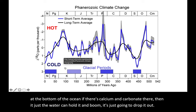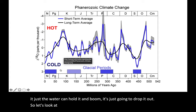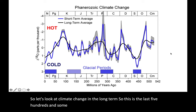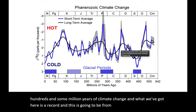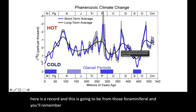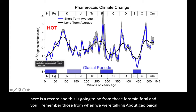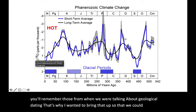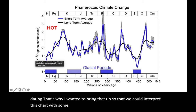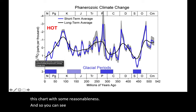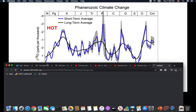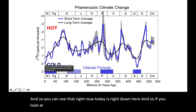Let's look at climate change in the long term — the last 500 and some million years. What we've got here is a record from those foraminifera. You'll remember those from when we were talking about geological dating. You can see that right now, today is right down here. If you look at this, we are actually in one of the coldest periods that the Earth has ever been in right now.